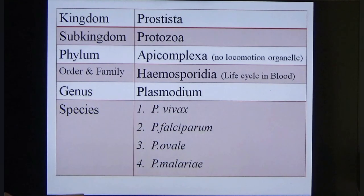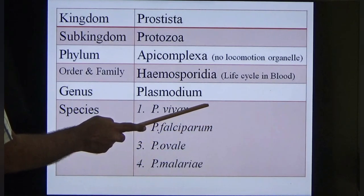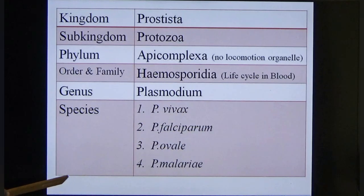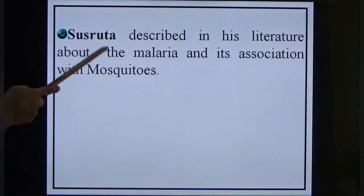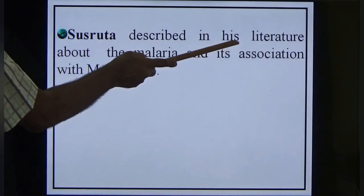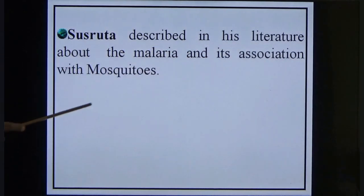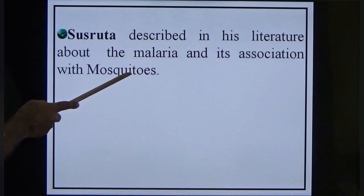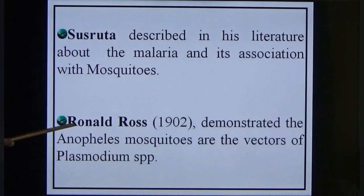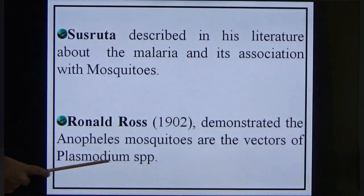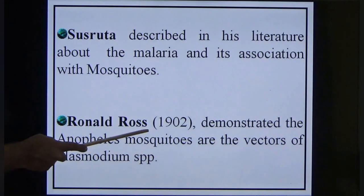We are going to study these four parasites. The most common is Plasmodium vivax and the most dangerous is Plasmodium falciparum — we will study why later. Susruta described in his literature about malaria and its association with mosquitoes. Ronald Ross in 1902 demonstrated the Anopheles mosquito as the vector of the Plasmodium species, and for this he received the Nobel Prize.